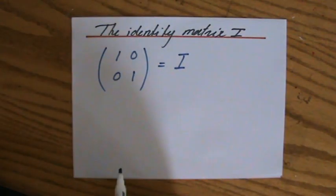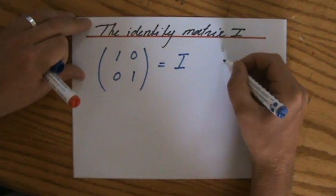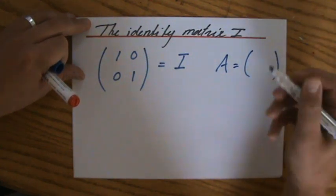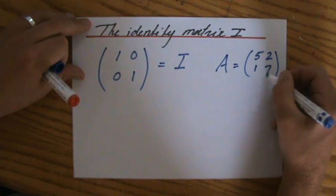Okay, now what can we say about the identity matrix? Let's say I have a different matrix, matrix A, also order 2 by 2. Let's say 5, 2, 1, 7. It doesn't matter.